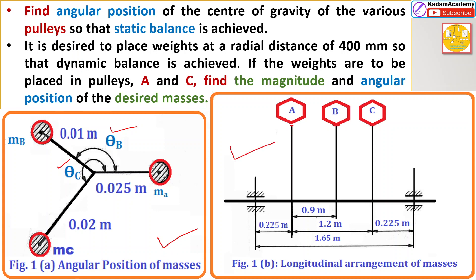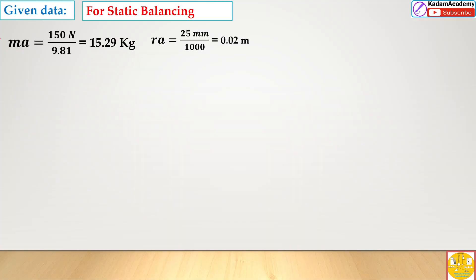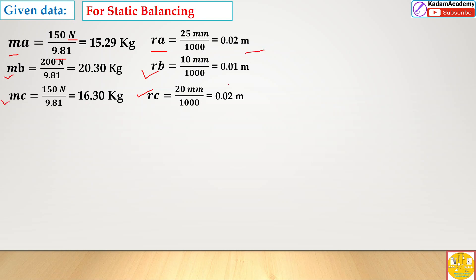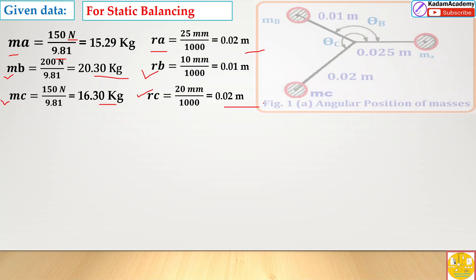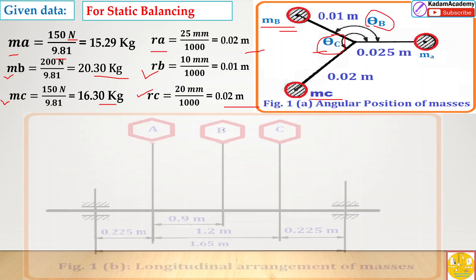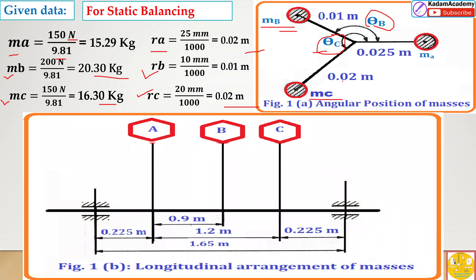After reading the problem, two diagrams are important to draw. The given masses and radii (center of gravity distances) are converted from Newtons by dividing by 9.81, giving values in kg. Similarly, m_b, m_c, r_b, r_c are converted to meters and kilograms. We draw the arrangement diagram but we don't know the positions theta_b and theta_c — these are what we have to find. We also draw the longitudinal arrangement of masses.